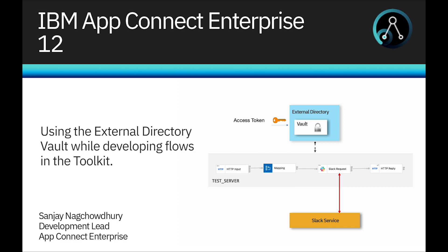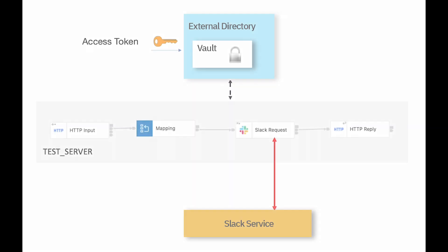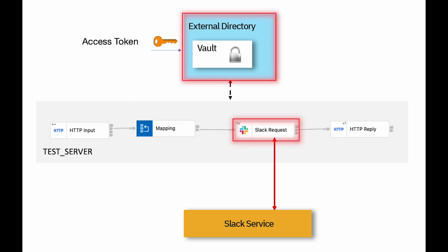Hi, I'm Sanjanak Chowdhury, development lead for the IBM AppConnect Enterprise product. In this video, I will demonstrate changes to the toolkit when creating a local integration server, so that they can either use a private vault or an external directory vault. I will show that it is now easier to configure a discovery connector node like Slack request when using an external directory vault. This capability was added in IBM AppConnect Enterprise version 12.0.9.